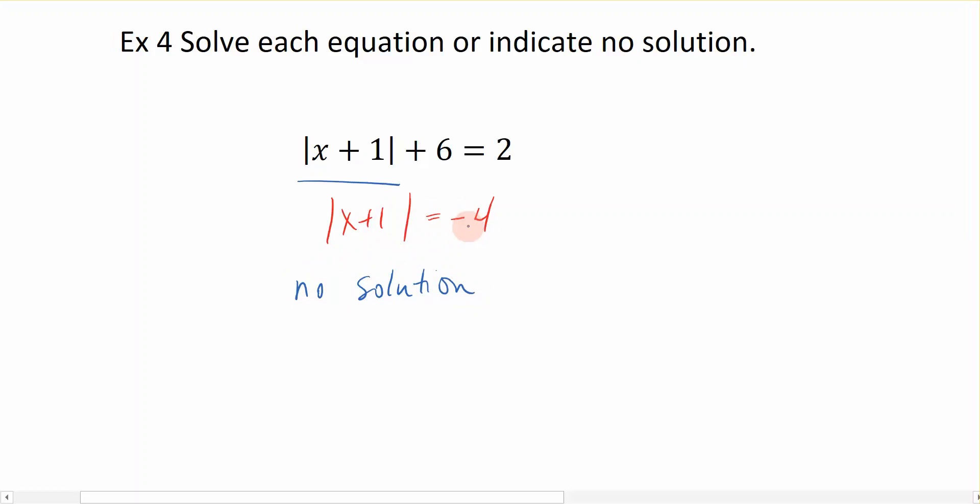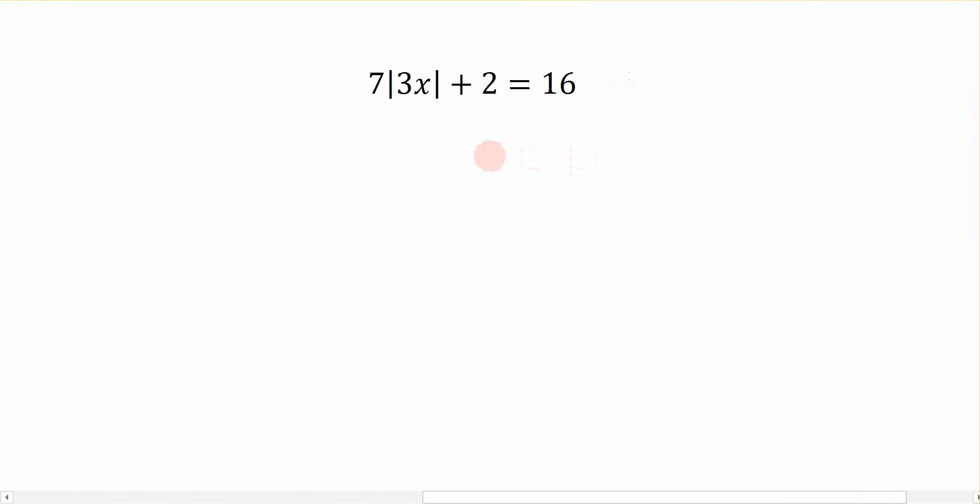That was pretty easy for our first one. Let's try another one. Here's our second example. We have 7 times the absolute value of 3x plus 2 equals 16. Again, we need to try to isolate the variable component. So I'm going to subtract 2 to the right-hand side. I get 7 times the absolute value of 3x is equal to 14. Now I'm going to divide both sides by 7 because I'm still trying to get the absolute value portion by itself. So when I divide both sides by 7, I get the absolute value of 3x is equal to 2.